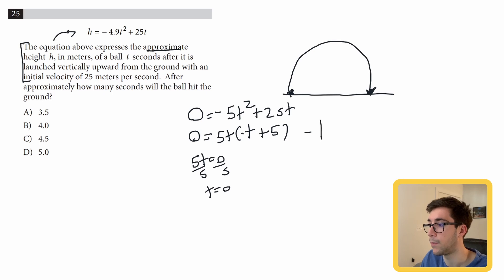Next one would be negative t plus five equals zero. Add t to both sides, and we get five equals t. So it took five seconds to go from beginning to the end, and our answer is going to be D, five seconds.